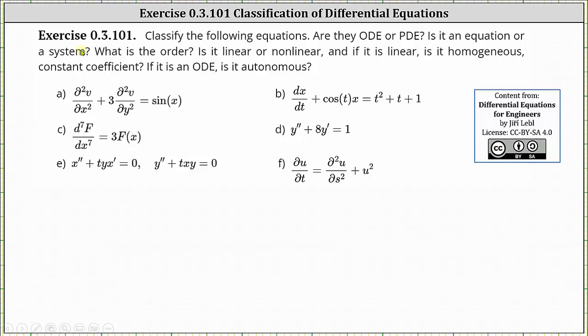Classify the following differential equations. Are they ordinary differential equations or partial differential equations? Is it an equation or a system? What is the order? Is it linear or nonlinear? And if it is linear, is it homogeneous or does it have constant coefficients? If it is an ordinary differential equation, is it autonomous?